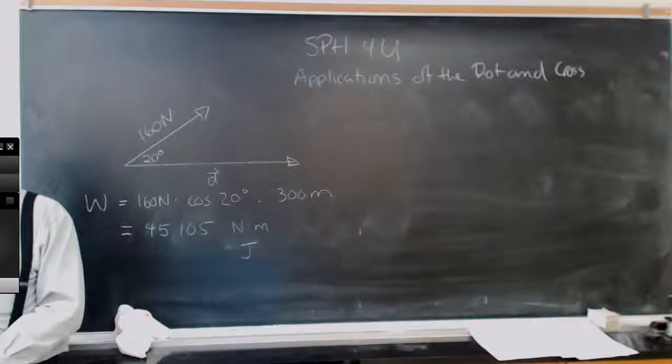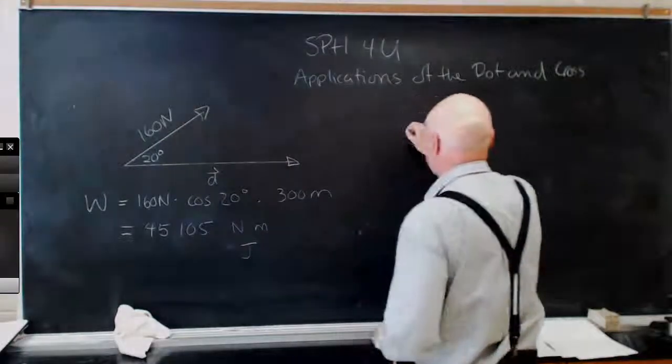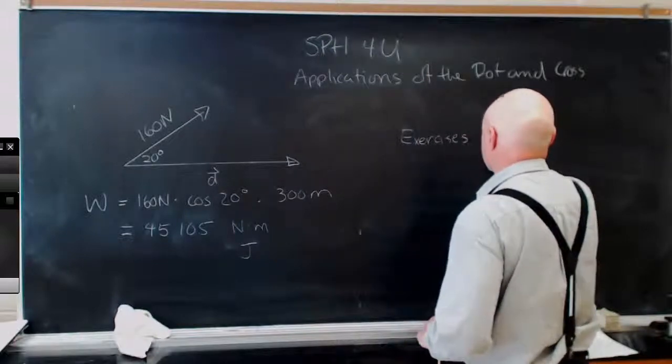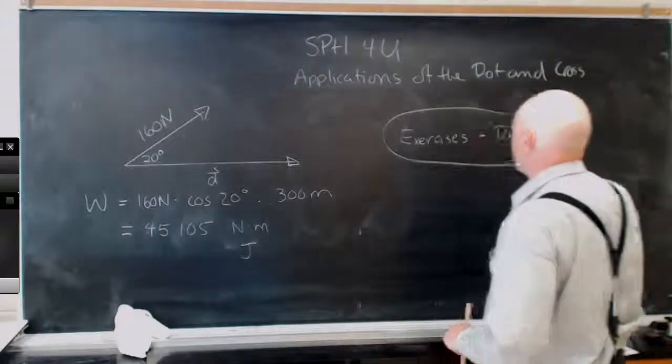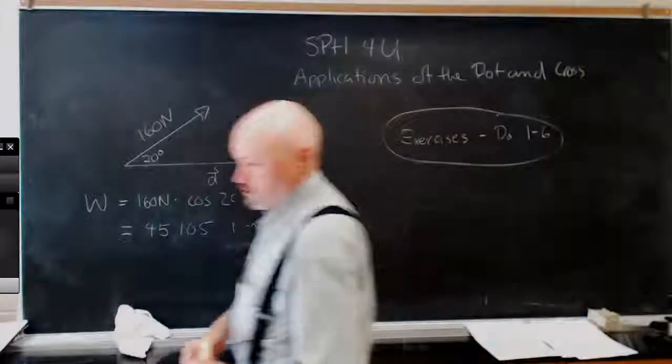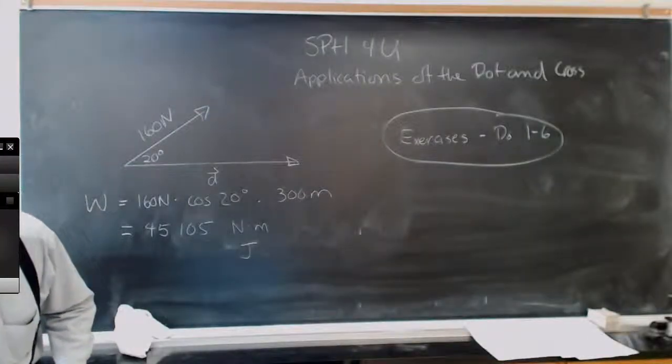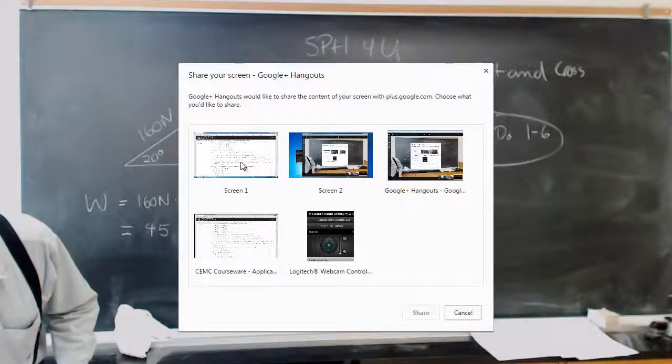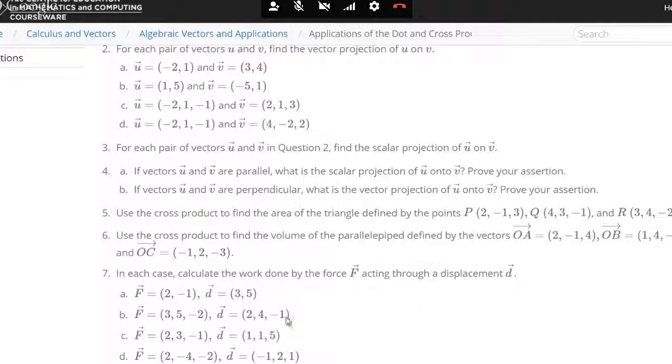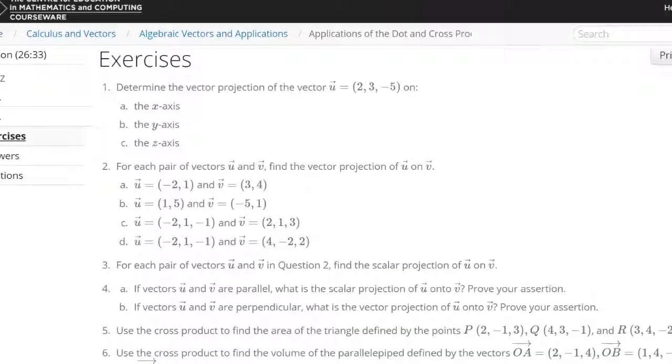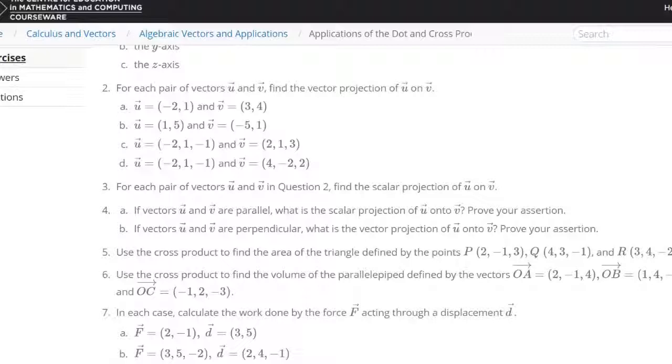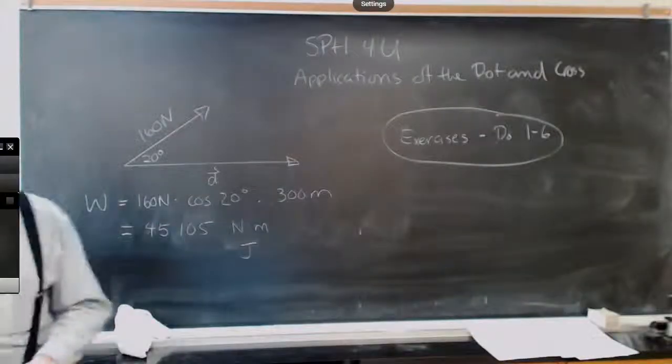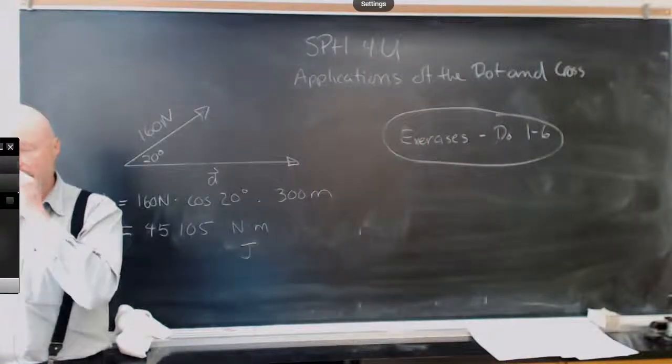So I think we're going to do questions one through six. So number six is actually finding the volume of a parallelepiped and I don't think we're going to worry too much about the work, doing a bunch of work calculations. So number one is just doing some projections. So we'll just do some projections down to number six. There we go. Hey, Luke, how's the assignment work coming? Awesome.